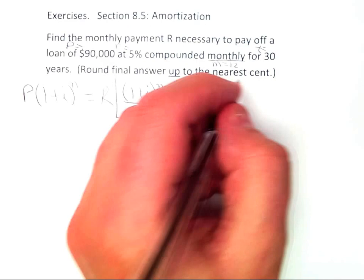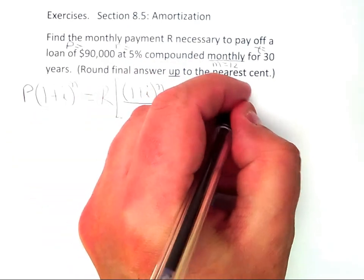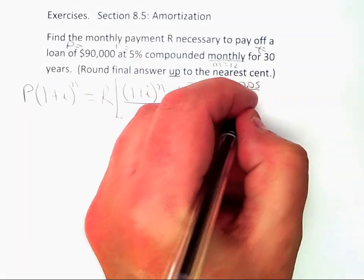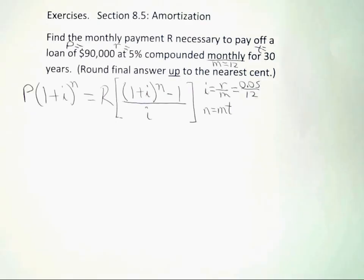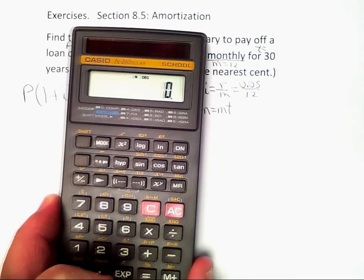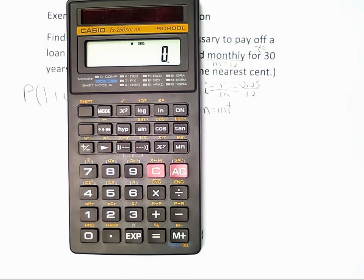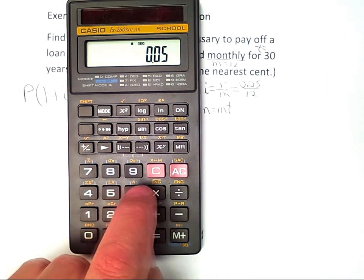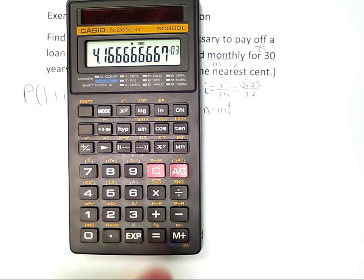To calculate little i, we take 5% as a decimal, which is 0.05, and divide by 12. Word of warning here: the only calculator you can use on the test is this one, and you need to be proficient with it, so practice with this calculator. 0.05 divided by 12 equals.